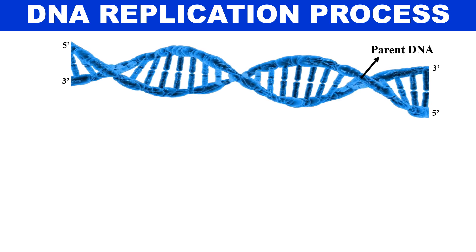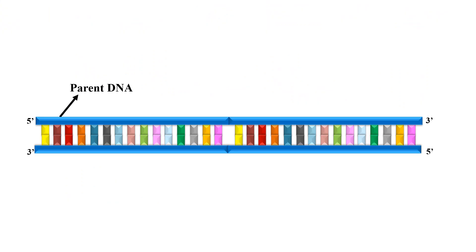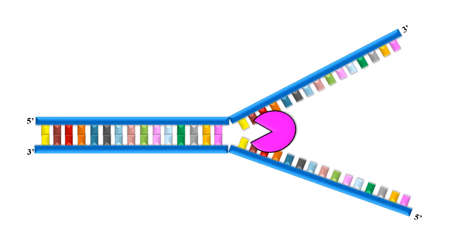Let's start the DNA replication process with the parent DNA. Parent DNA is that DNA which will replicate itself. To simplify the coil structure of DNA, you can consider it as a straight strand structure. The first step is initiation, which involves the opening of the two strands. This opening is done by the enzyme DNA helicase, which breaks the hydrogen bonds between the nitrogenous bases and opens up the DNA.